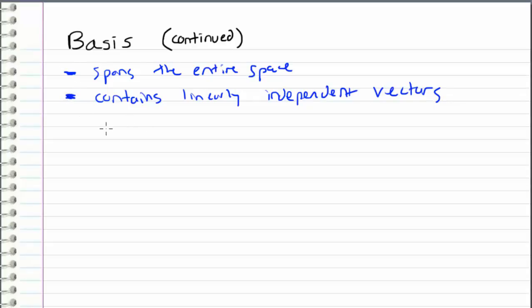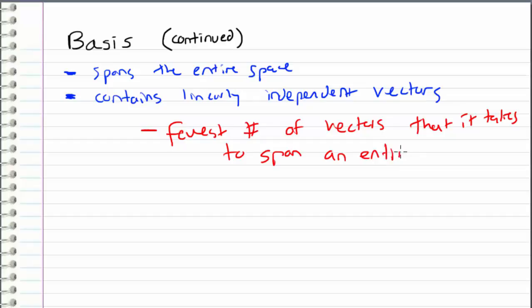So when we put these two criteria together, what we get is a basis represents the fewest number of vectors that it takes to span an entire space. So the basis contains a set of vectors that is large enough to span the space that it is a basis for, but it's small enough to where it only contains linearly independent vectors. So that's why I say that it represents the fewest number of vectors that it takes to span an entire space.